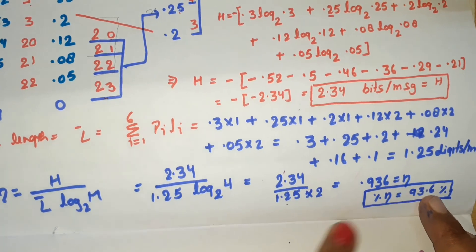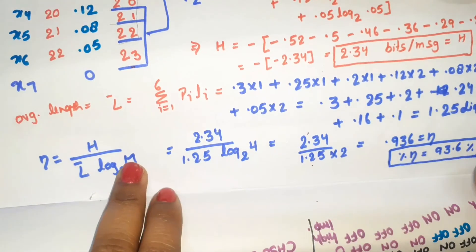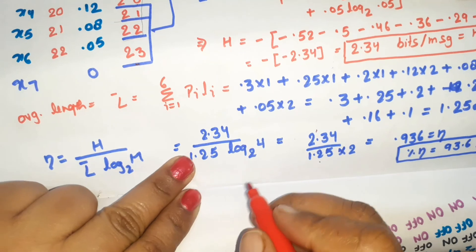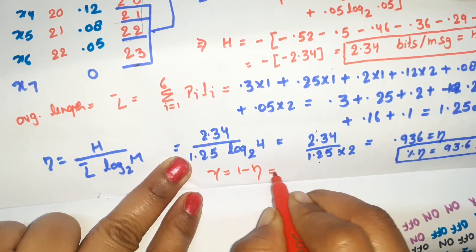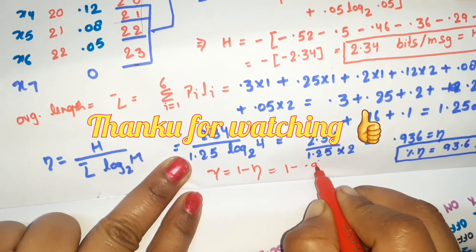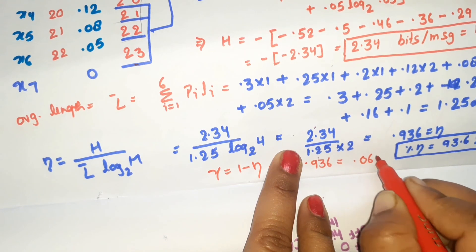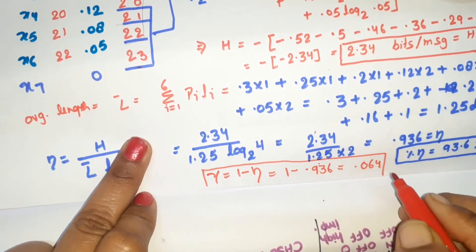Now we calculate redundancy. The redundancy formula is: redundancy = 1 - efficiency = 1 - 0.936 = 0.064. So this is the redundancy for this question. Thank you.